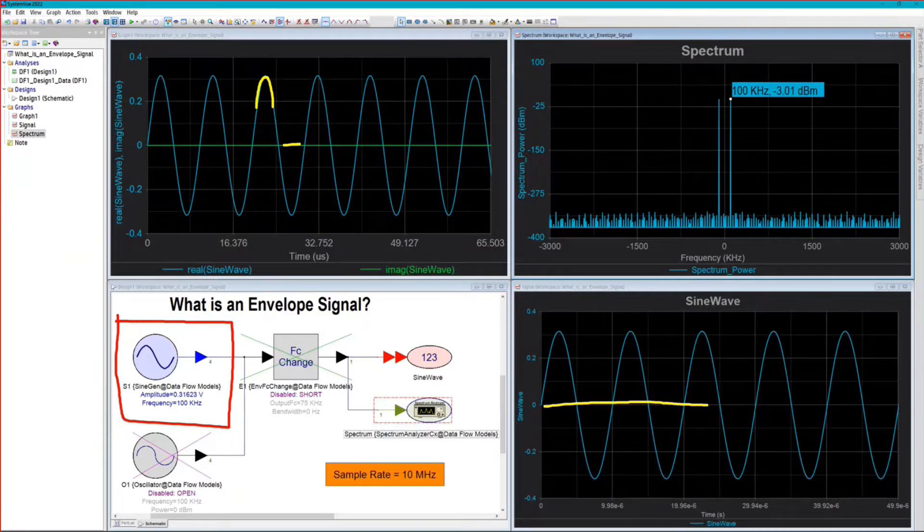All we have to do in this mode is make sure that we are sampling at at least twice the frequency of the signal that we want to see, and as long as we meet that requirement, we're good. So this is SystemVue in plain old real baseband mode.